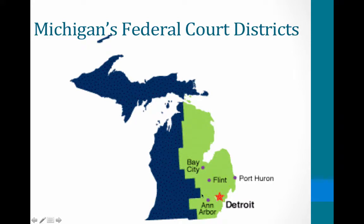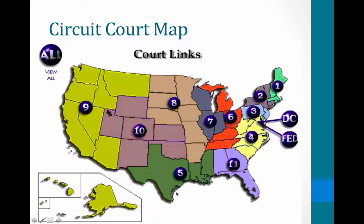Michigan is divided into two districts — the eastern district and the western district — and you can see the court locations in each. This is the circuit court map. Notice Michigan is in the sixth judicial circuit, along with Ohio, Kentucky, and Tennessee.